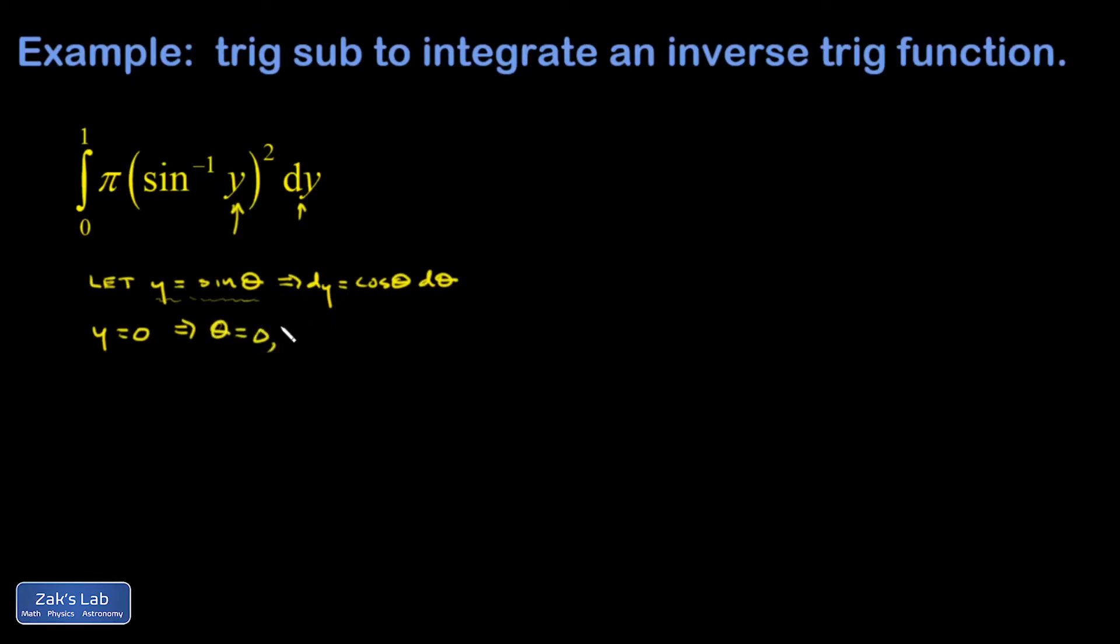For the upper limit, when y is one, one equals the sine of theta. That means theta is the angle whose sine is one, which is pi over two.